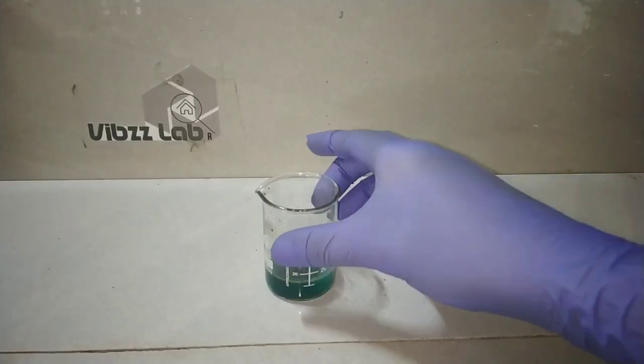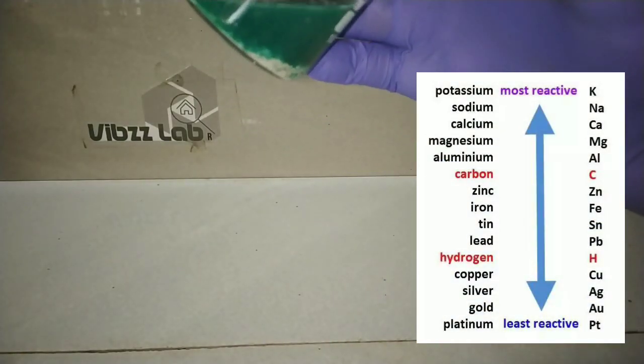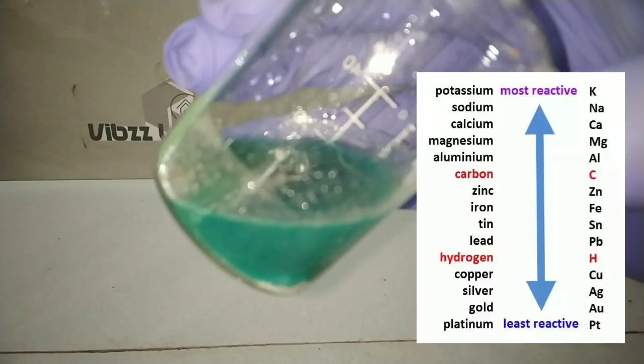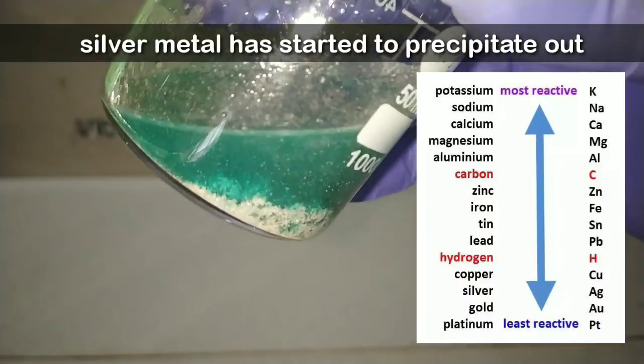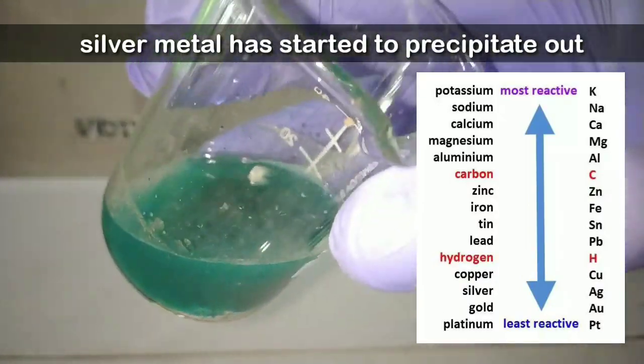So silver gets precipitated out. After about 3 minutes later when I look, I see that the silver precipitate has started to form. You can see the grey white color of silver metal.